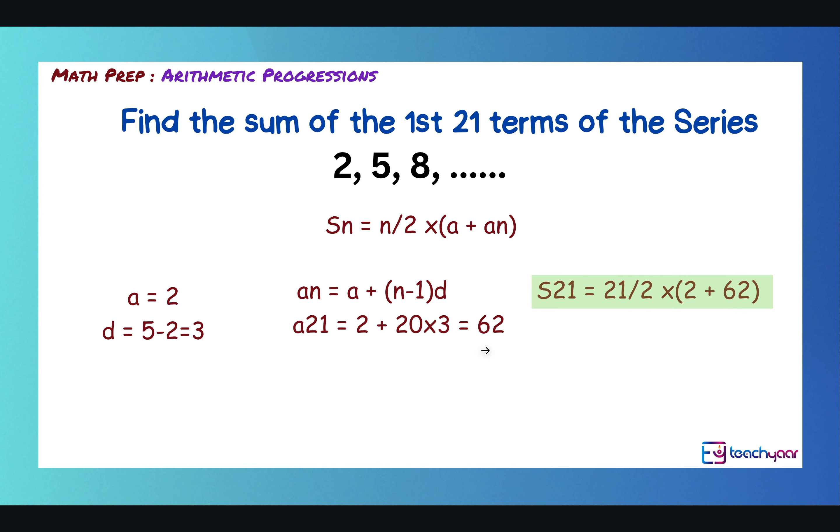And now, to get the sum. So, the sum is 21/2, because n is 21, times (2 + 62), because we have got 2 which is a and 62 we have just computed. So, 21/2 times 64 and that is 672.